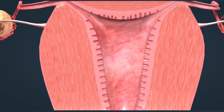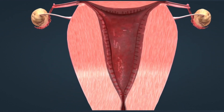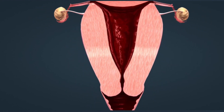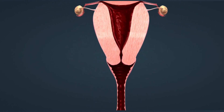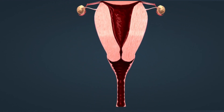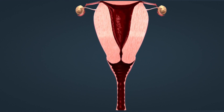If fertilization does not take place, the endometrium dies and it is sloughed off by menstrual bleeding. Menstruation usually lasts 4 to 6 days, and 30 to 50 milliliters of blood is discharged on average.